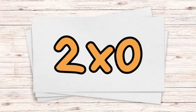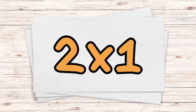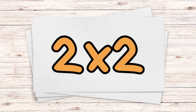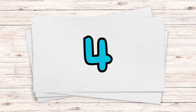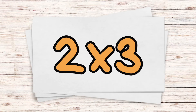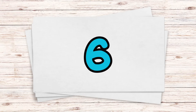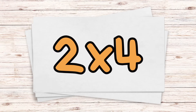Two times zero — zero. Two times one — two. Two times two — four. Two times three — six. Two times four — eight.